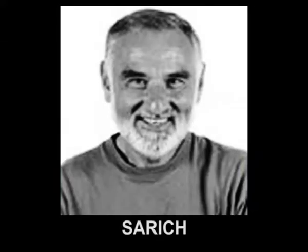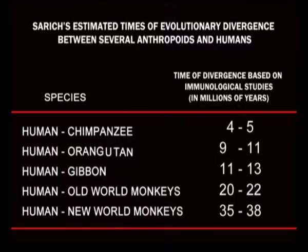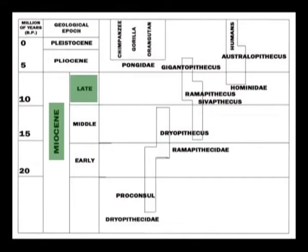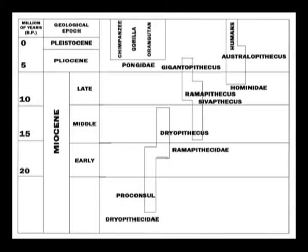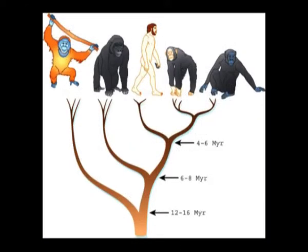Moreover, the estimated time of evolutionary divergence also indicates that around the late Miocene epoch, some members of the family Ramapithecidae, which is a distinct family according to some biologists, evolved as direct ancestors of the living apes. On the other hand, some members of the family Ramapithecidae evolved as ancestors of human beings. Before five million years ago, the ancestors of the living apes and humans stood on the same evolutionary tree; thereafter they diverged in different directions and produced different morphological variations as a result of the interaction between the organisms and their environments.